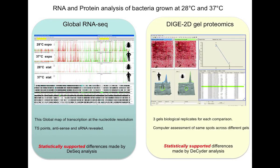Similarly with the proteomics — from the same biological samples we did the RNA-seq, we also did the proteomics, so we can correlate them directly. Using three biological replicates for each condition, this was done by the Cambridge Proteomics Facility using a program called DECIDER, which for each spot plots your three conditions as intensity spots and identifies statistically significant differences in protein expression. That again gives you statistically supported differences in proteins, so two very big and very useful datasets.